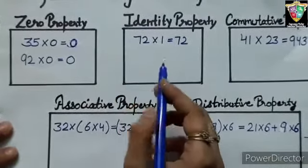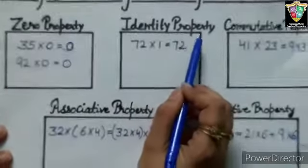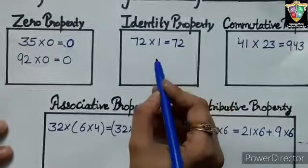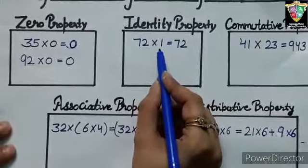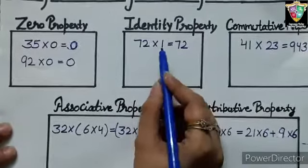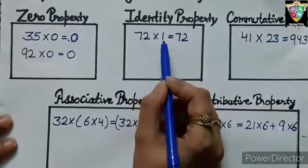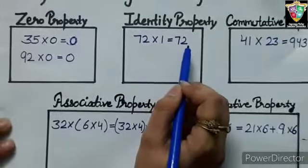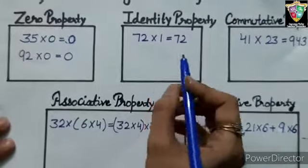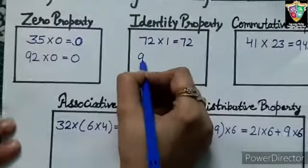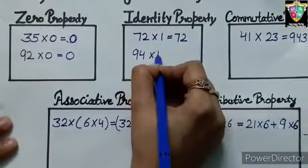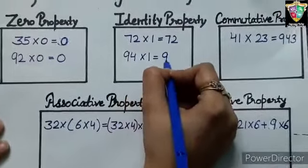Now second property, identity property of multiplication. If we multiply a number by 1, the product is the same number. 72 multiplied by 1 equals 72. Similarly, 94 multiplied by 1 will be equal to 94.